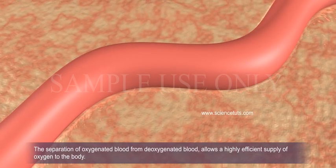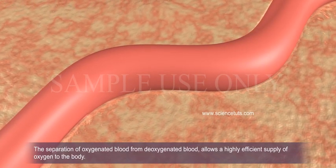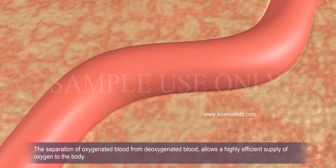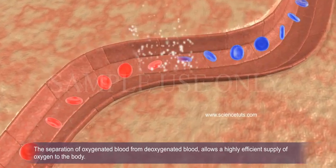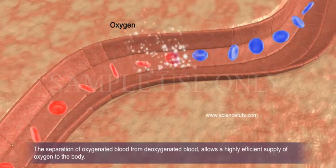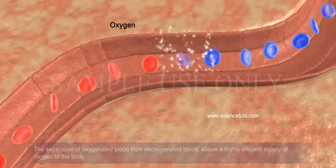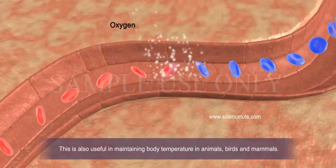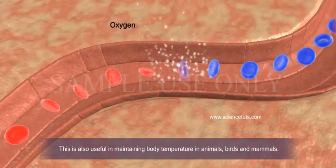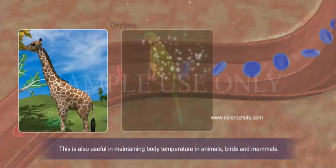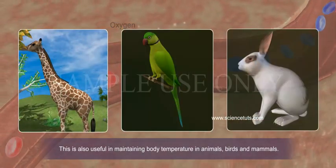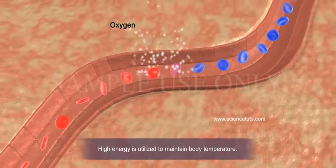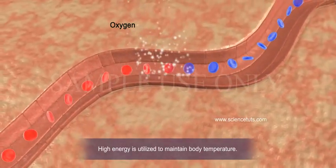The separation of oxygenated blood from deoxygenated blood allows a highly efficient supply of oxygen to the body. This is also useful in maintaining body temperature in animals, birds and mammals, where high energy is utilized to maintain body temperature.